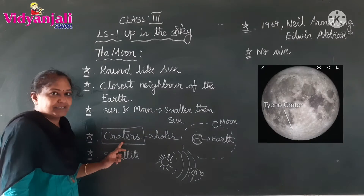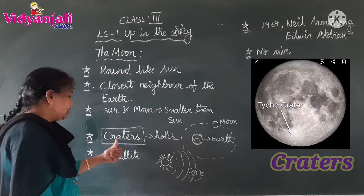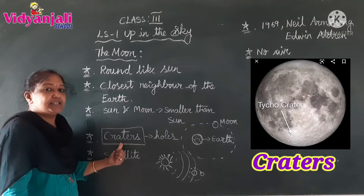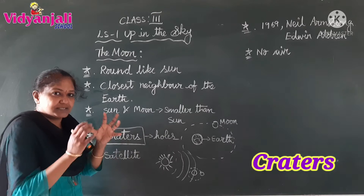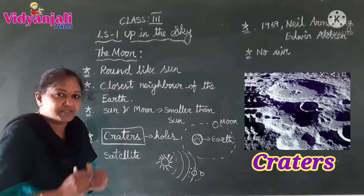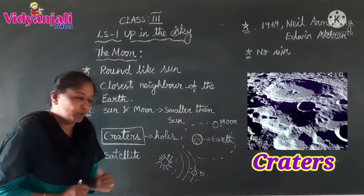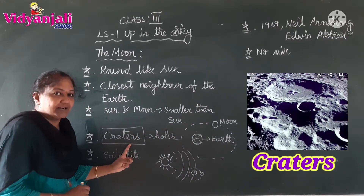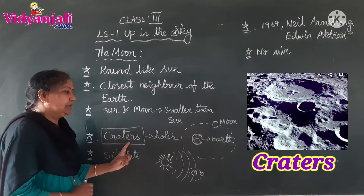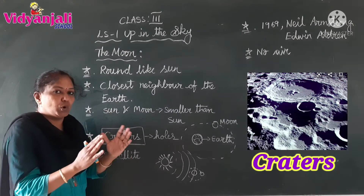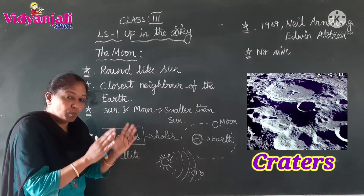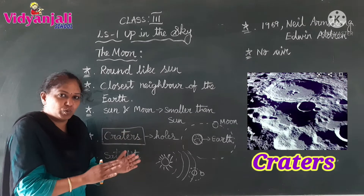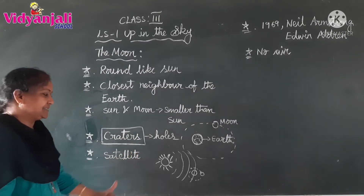Now coming to the craters. It is a new word for you, children. What are craters? Craters means some big holes on the moon. Those big holes on the moon are known as craters.